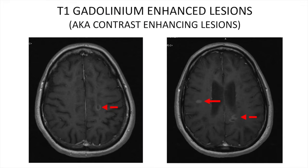Here we see examples of T1 contrast enhancing lesions, or gadolinium enhancing lesions. Gadolinium is a chelating agent injected into the vein partway through the MRI. It lights up the blood vessels so we can see them, but because of the blood-brain barrier the dye stays in the blood vessels and doesn't leave. However, with an acute new MS lesion, the blood-brain barrier becomes irritated and the dye can leak out into the brain tissue. Keep in mind that the dye only leaks out like you see in these pictures for two to maybe up to four weeks. So when you see a contrast enhancing lesion, you're looking at a new lesion right now.